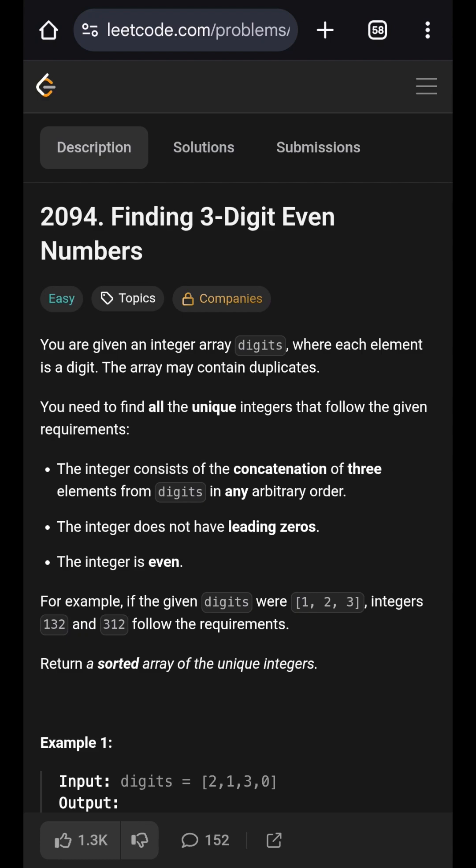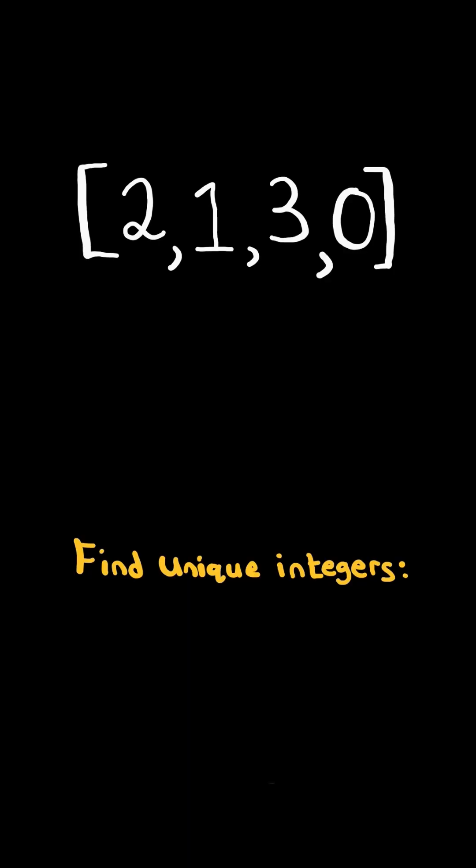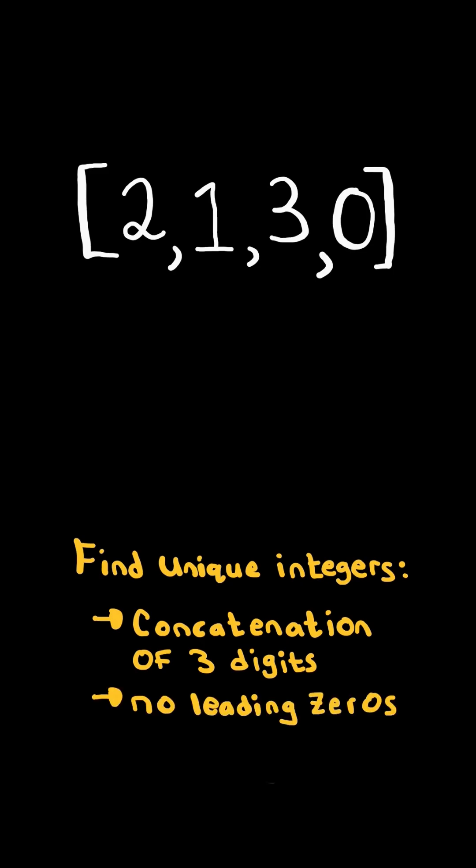Finding three-digit even numbers. Find all unique integers where it consists of the concatenation of three digits, no leading zeros, and the integer is even.